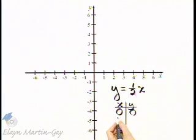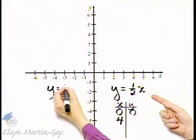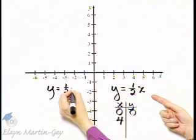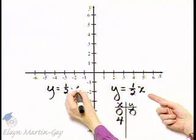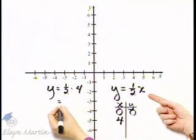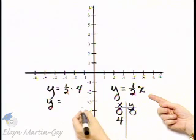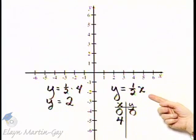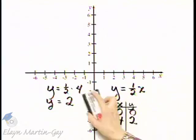Let's let x be another number. What if x is four? Let's go ahead and show that work. Then y is equal to one-half times, remember we replace x with four. So y is equal to one-half times four, that's four over two or two. So when x is four, y is two, that's another ordered pair solution.